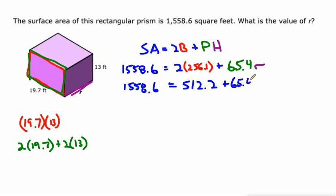Let's subtract 512.2 from both sides, so 1558.6 minus 512.2, that's 1046.4 equals 65.4r.